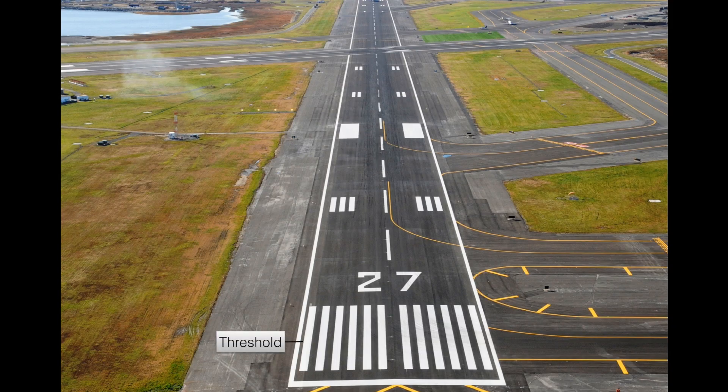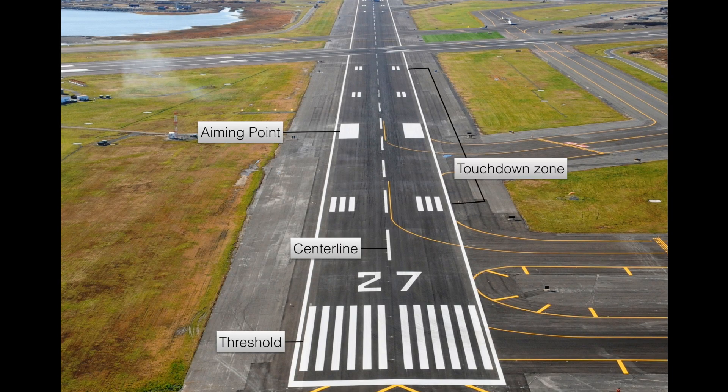The threshold shows the beginning of the runway where an airplane can land. The center line helps the pilot maintain the airplane right in the middle of the runway. And the aiming point acts as a reference to touchdown in the touchdown zone.